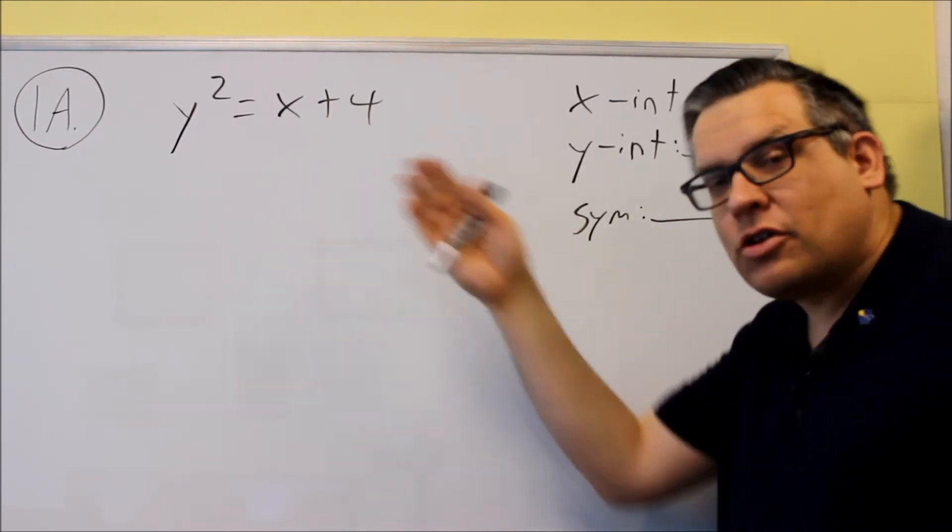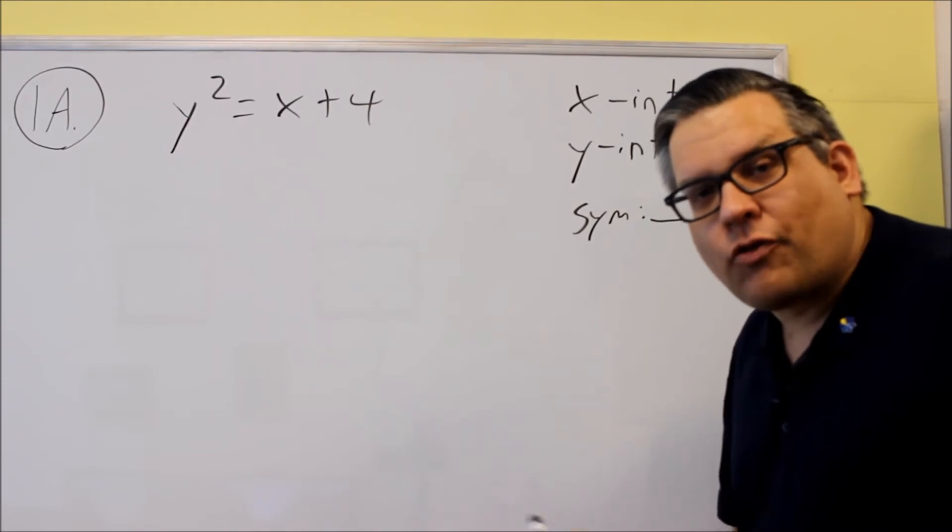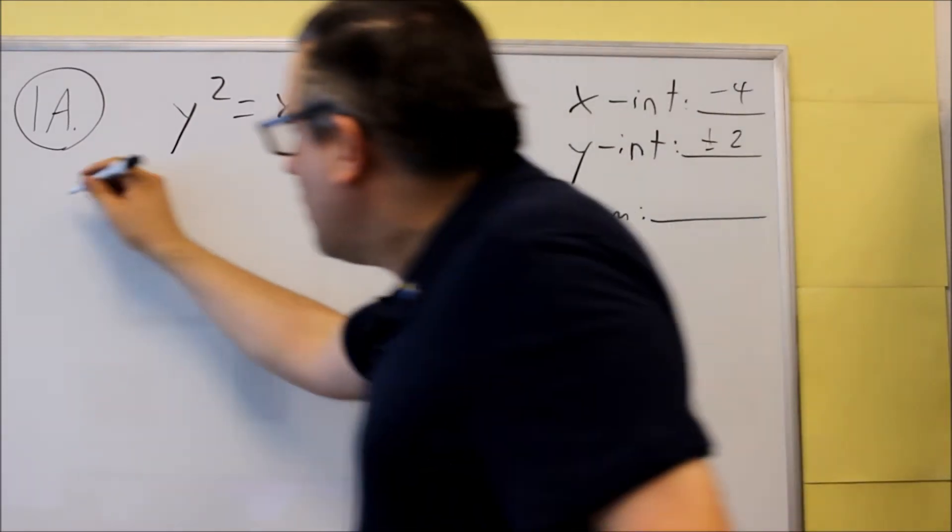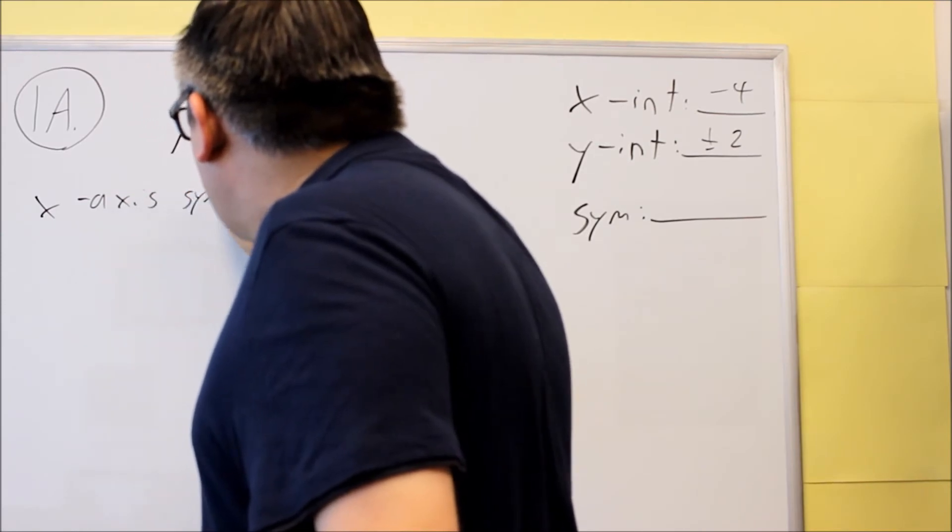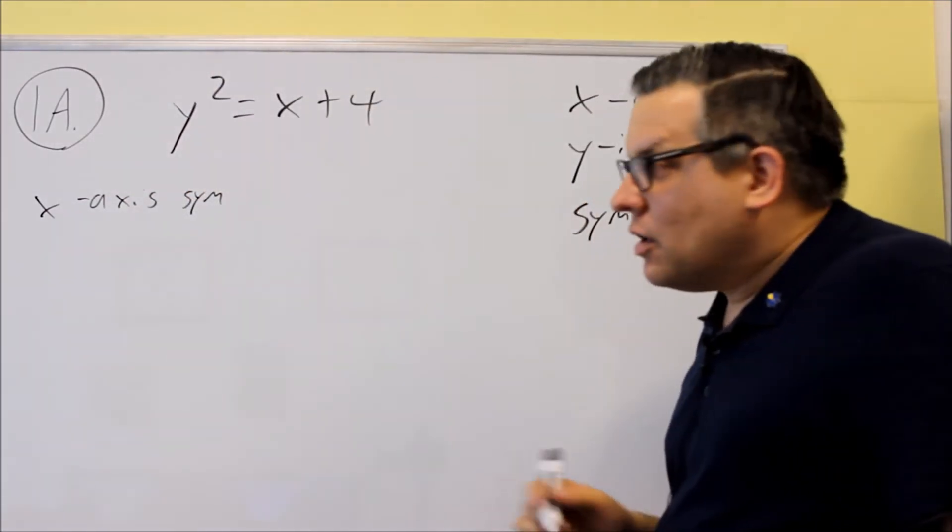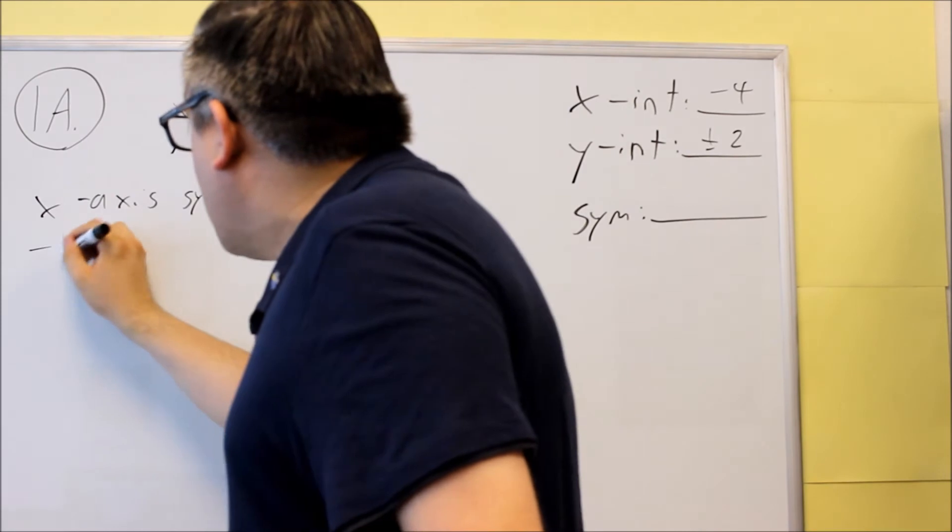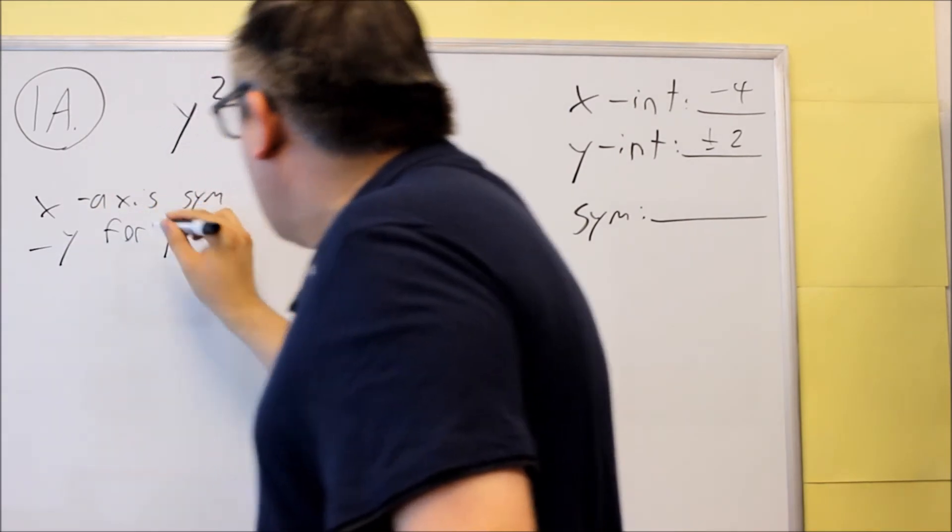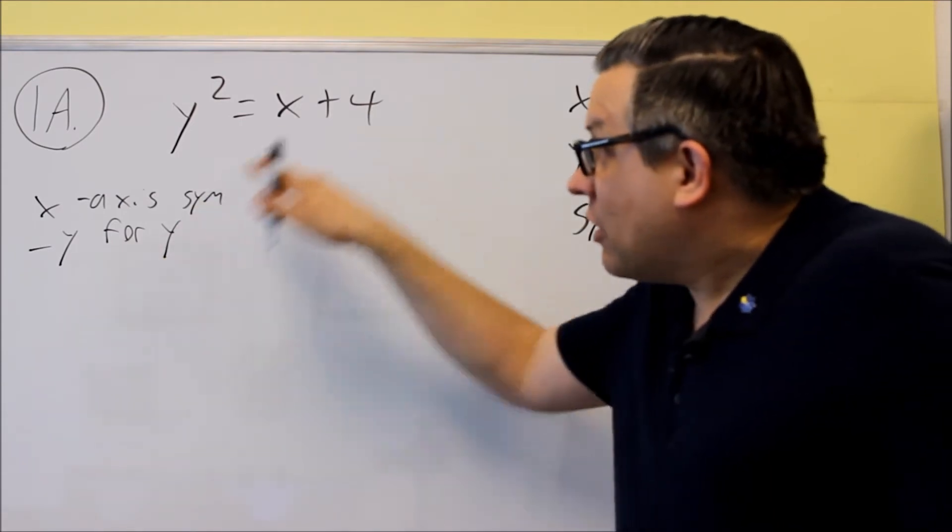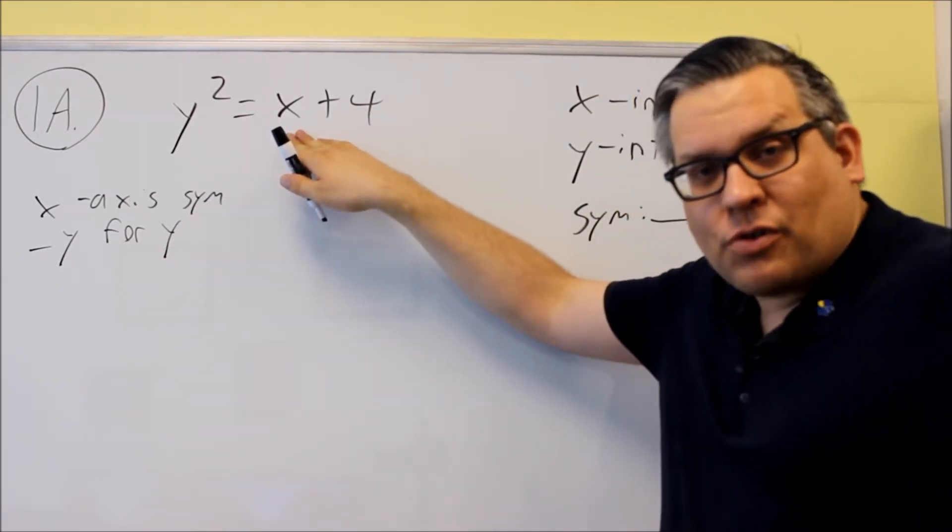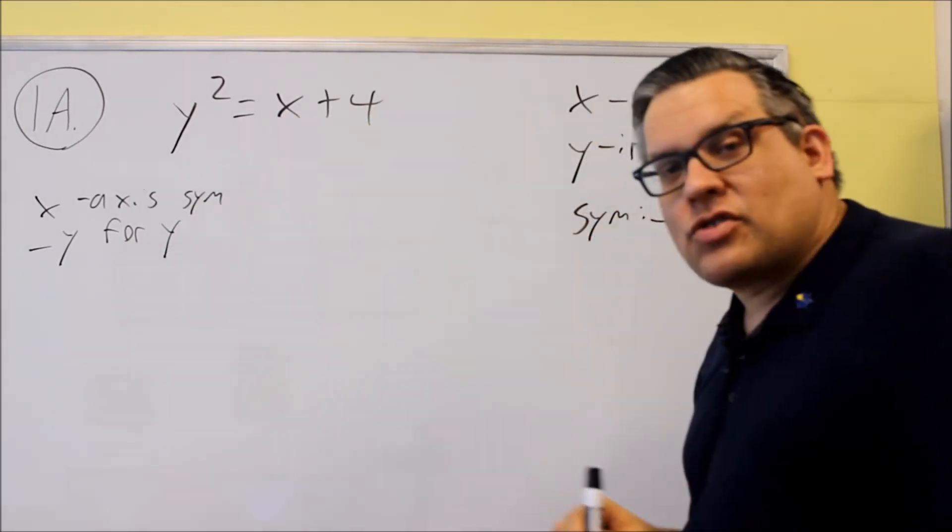Make sure you label it clearly what tests you're doing for each of these. Like it says on the key and like I'm going to do here, this is what you want to show for the work for this particular problem. So for instance, if I want to test x-axis symmetry right there, the rule is you're going to put a negative y in for y and you're going to simplify it. If you get exactly the same thing that you started with, y squared equals x plus 4, that means it does have x-axis symmetry.